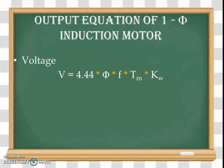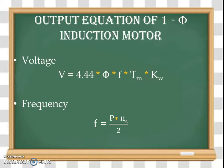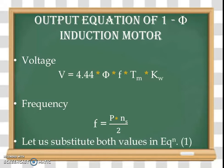V, the rated voltage, can be given by the equation: V = 4.44 × φ × F × Tm × Kw, where Tm is the turns of the main winding and Kw is the winding factor. For frequency, we know the equation F = (P/2) × Ns, where Ns is the synchronous speed in revolutions per second.